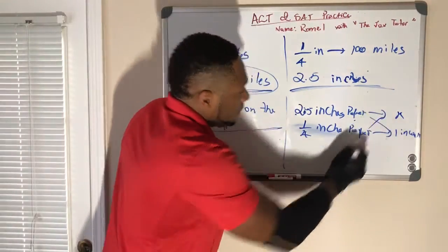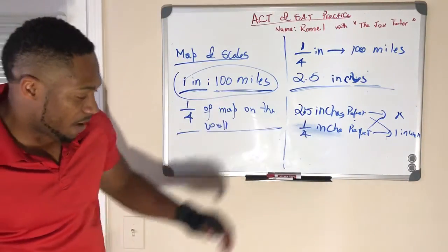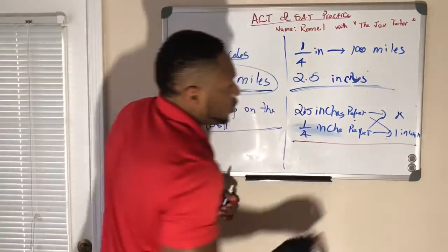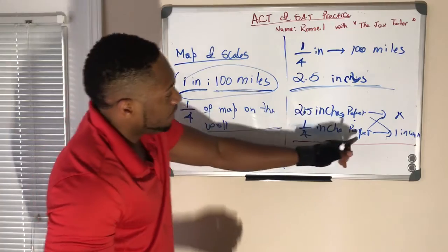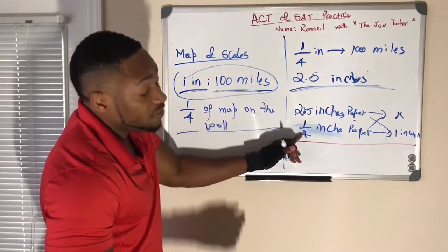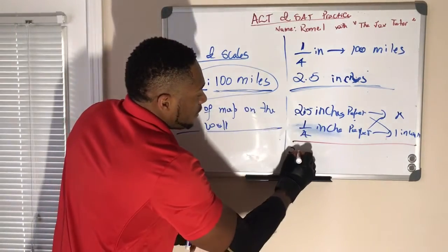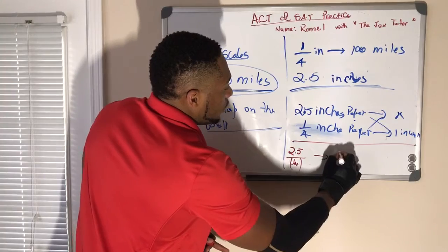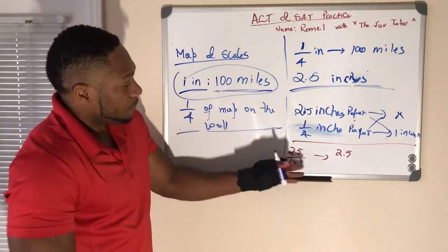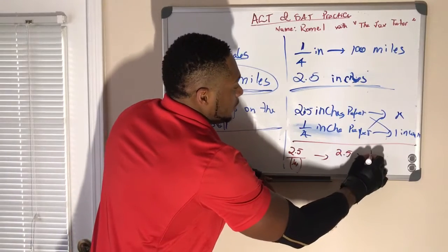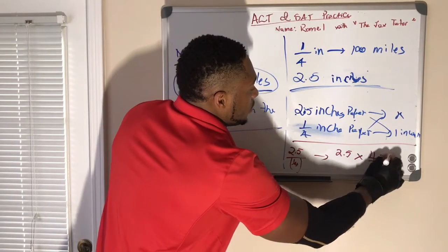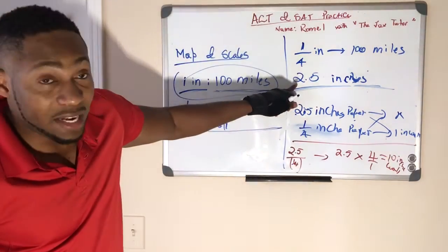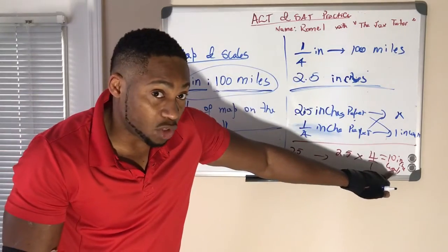So we cross multiply: x equals 2.5 multiplied by one, divided by one-fourth. When you divide by a fraction, it's the same as multiplying by its inverse — so 2.5 times 4 over 1, which equals 10 inches on the wall. So that 2.5 inches on the paper corresponds to 10 inches on the wall.